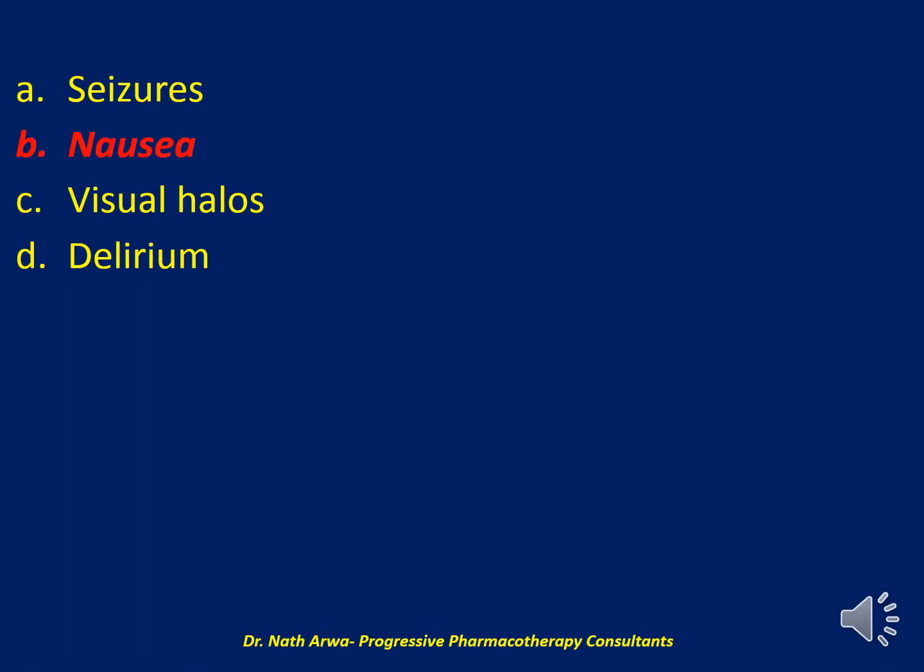Chronic digoxin toxicity is more common in elderly patients, and nausea is the most common non-cardiac symptom of digoxin toxicity. Visual disturbances and neuropsychiatric manifestations aren't as common as GI symptoms in chronic digoxin toxicity. The most common non-cardiac symptoms of chronic digoxin toxicity are loss of appetite, abdominal pain, and nausea.